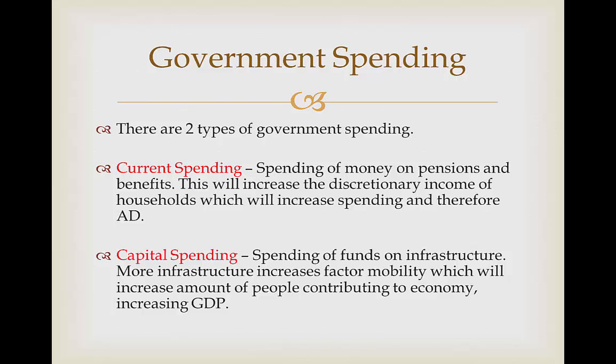Capital spending is the spending of funds on infrastructure from the government. More infrastructure is going to increase factor mobility, which pretty much means that it's a lot easier for people to get to work. So with an increase in factor mobility, more people are going to be able to contribute to the economy, which is going to increase our aggregate demand and the amount of goods and services which are going to be produced domestically.